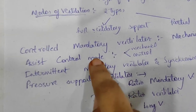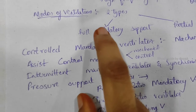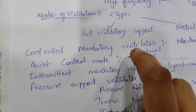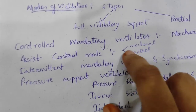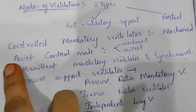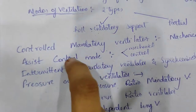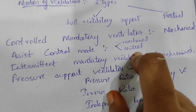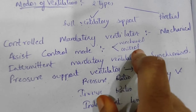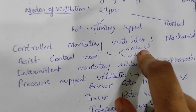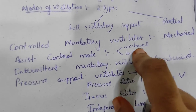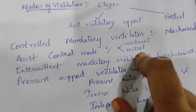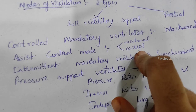In assist control mode, when the patient takes a spontaneous breath, the ventilator is triggered to deliver a preset level of ventilation. Tidal volume is set, and this mode is used in weaning. The patient is allowed to breathe spontaneously, and each spontaneous effort triggers the ventilator.